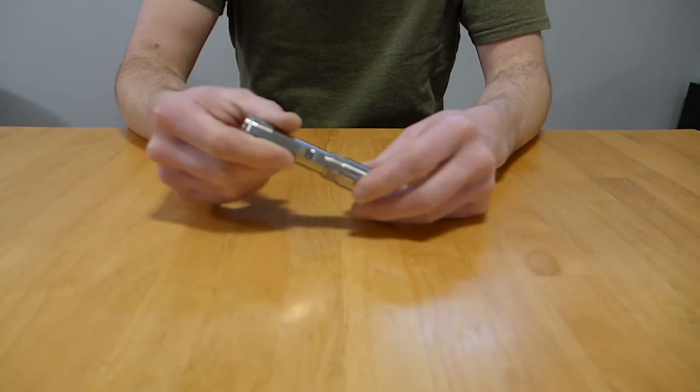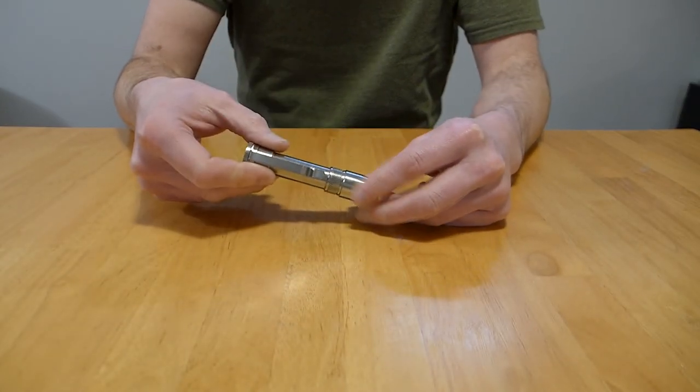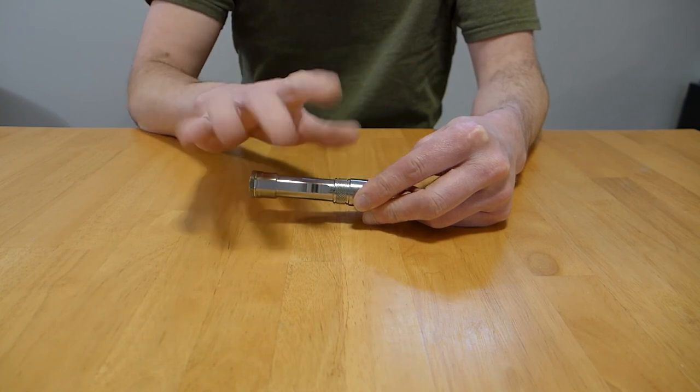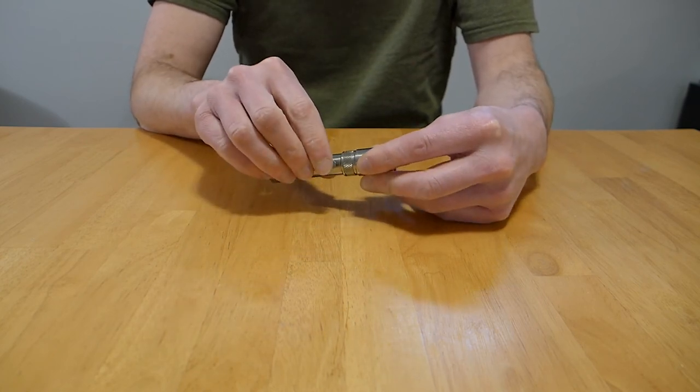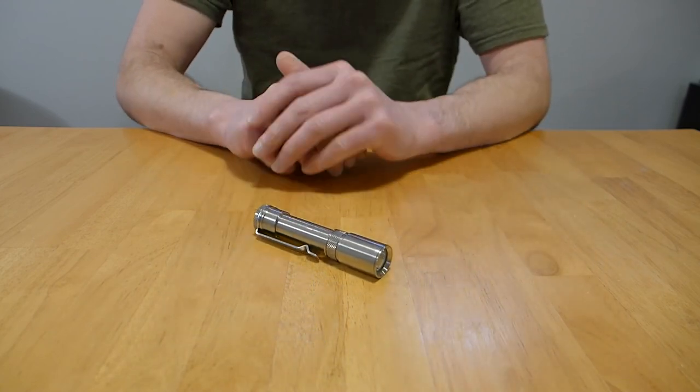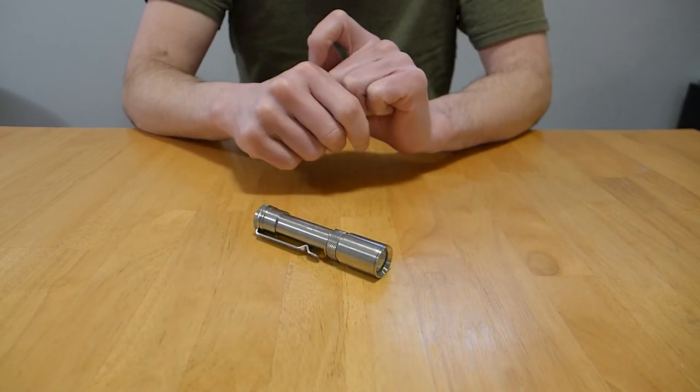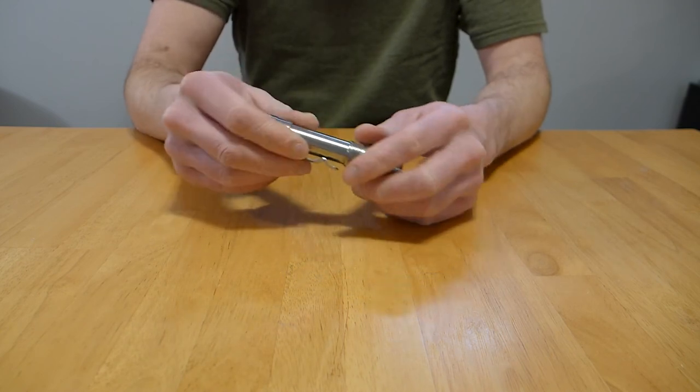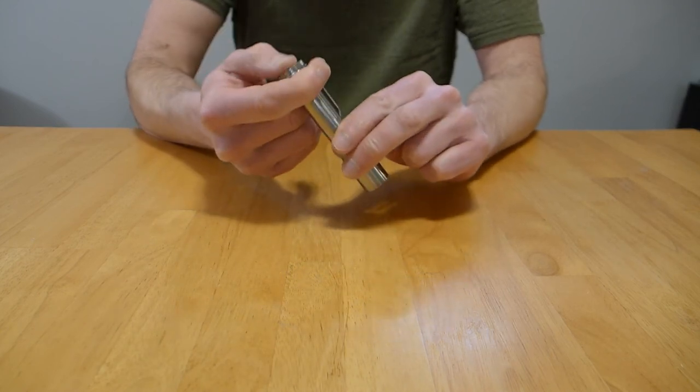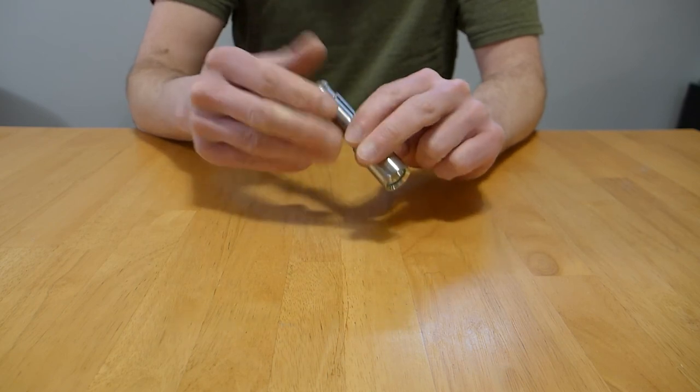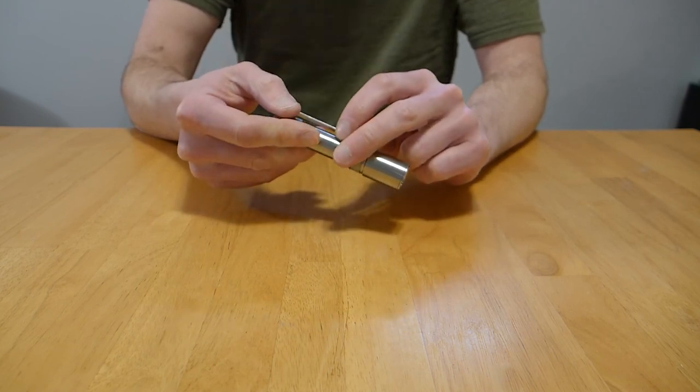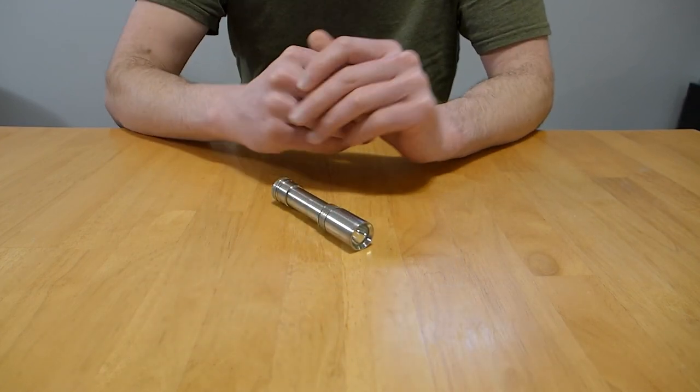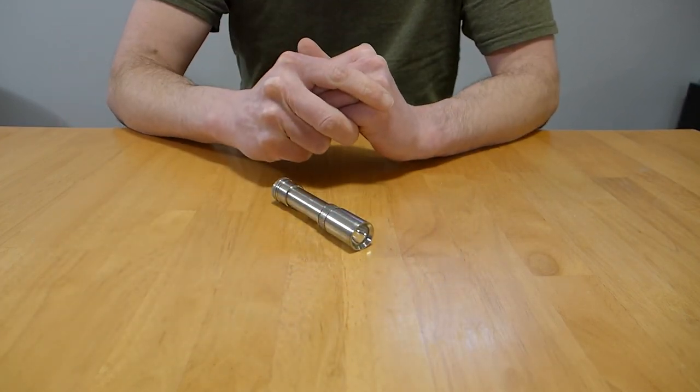So just to recap: with the programming menu, it's entirely self-driven. Once you enter it, there is no way to exit, you just have to leave it. So if you enter programming by accident and you don't want to change anything, just set the light down, let it exit on its own. If you do want to change something, go into the programming mode. When you get to the setting you want to change, tap the tail switch off, tap it back on, and set the setting appropriately. Then when you're done setting that setting, put the light down, let it continue, and it will exit on its own automatically.